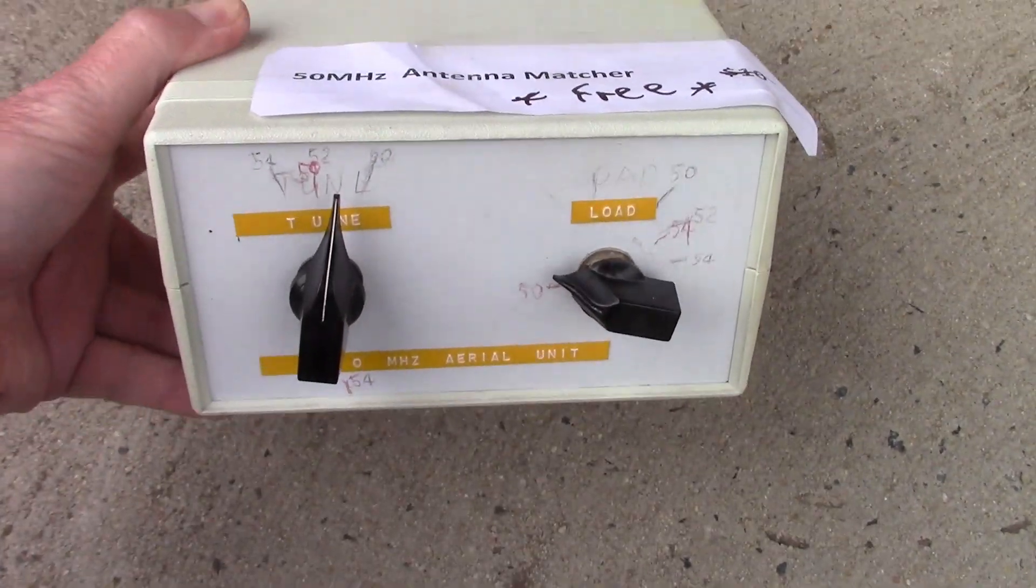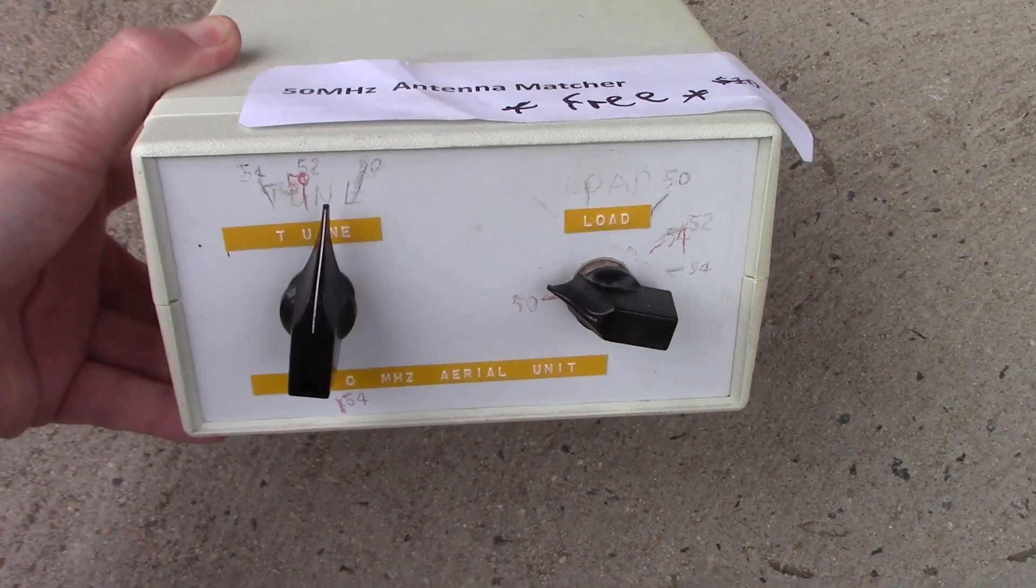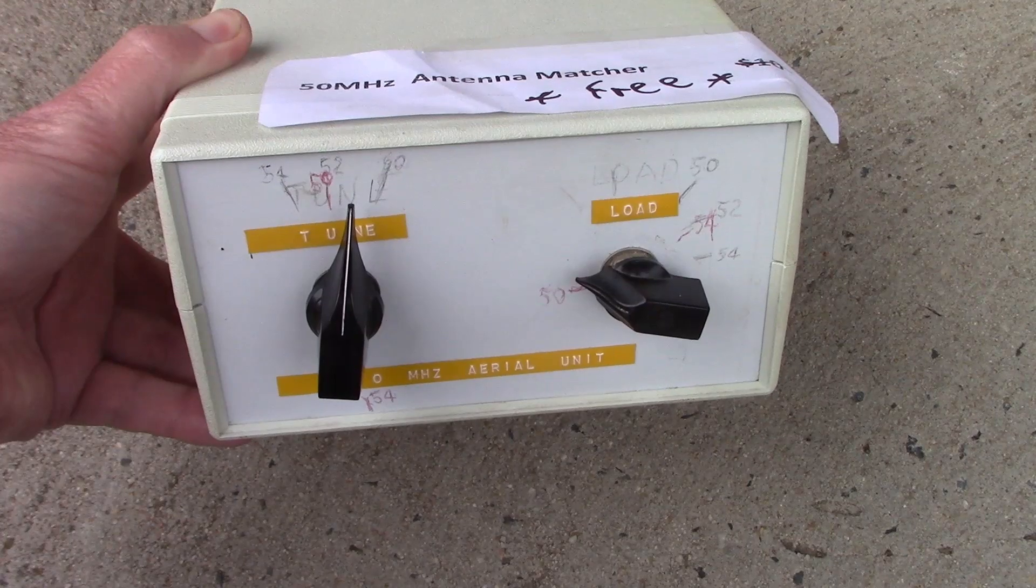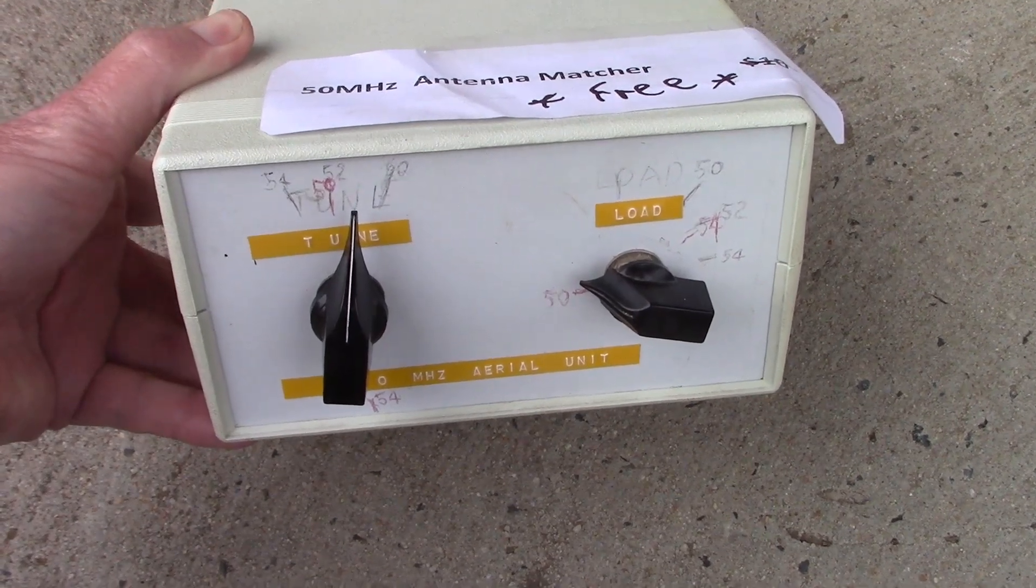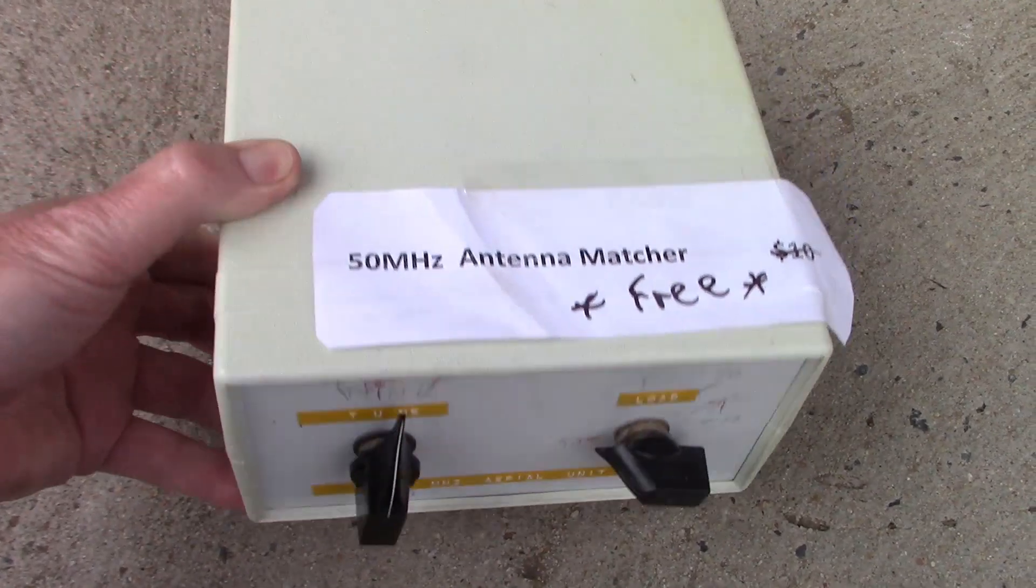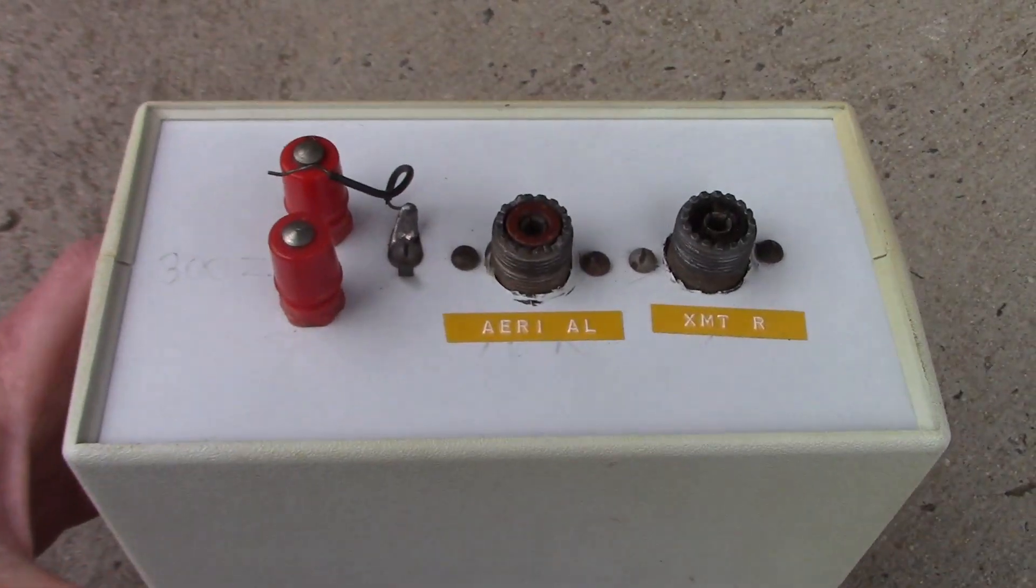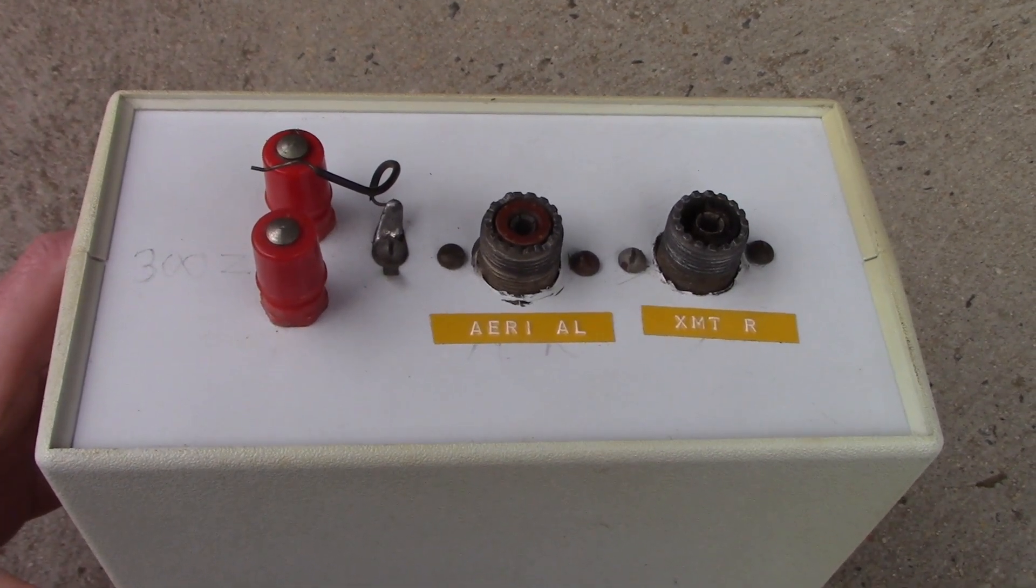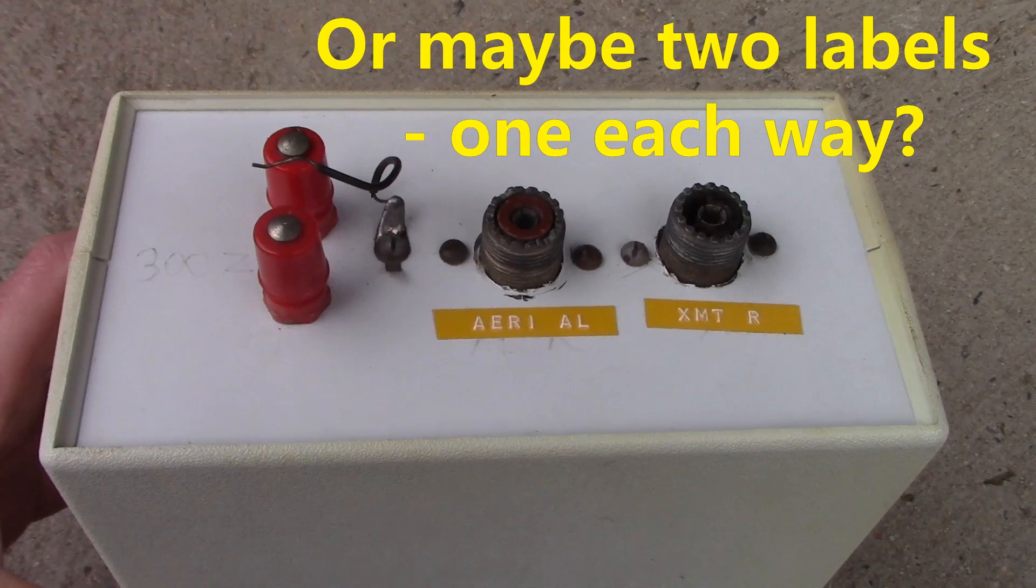Just one of the little quirks that you get in homebrew equipment but not necessarily in something that's commercially manufactured. Depending on how you use something, it might pay to also have labels upside down even though no commercial manufacturer would be crazy enough to do it.